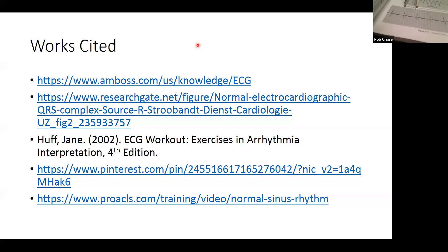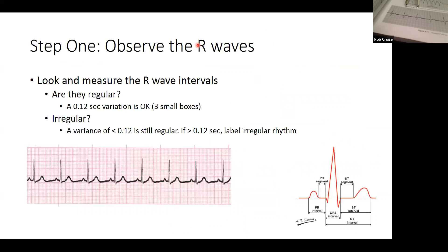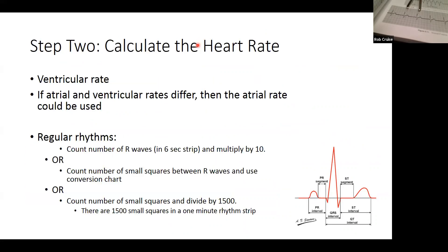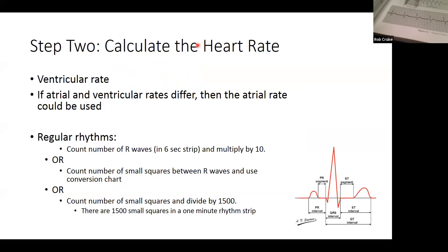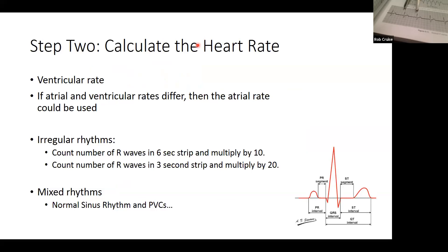Now let's look at the rhythm rate on this real strip. Counting the large boxes between the R waves: one, two, three, four, five — five large boxes. So this is a rhythm of 60 beats per minute. That puts it in normal sinus rhythm territory. So we can say: regular rhythm, rate of 60.